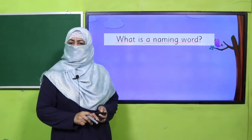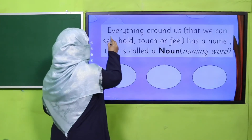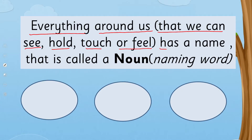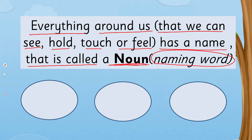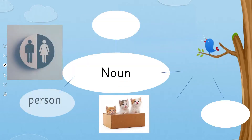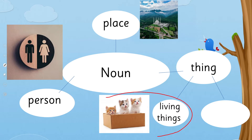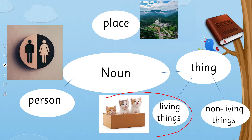My dear children, I hope all of you remember that everything around us that we can see, hold, touch, or feel has a name — that is called a naming word. Previously we knew that, and in grammar we call it a noun. Everything has a name; that is called a noun. This noun may refer to a person, place, or thing. We further categorize: nouns referring to things can be living things or non-living things.